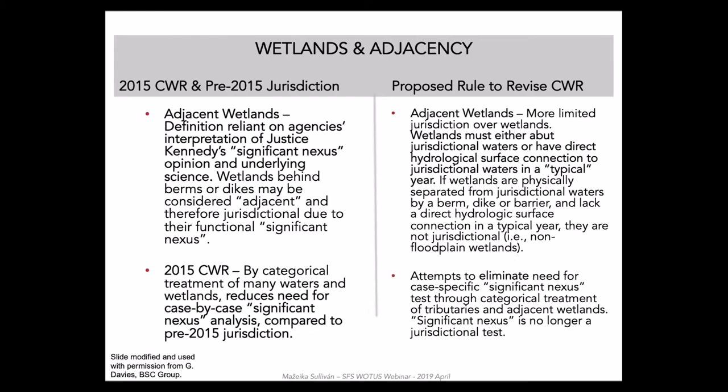What are some key differences in the proposed rule versus the 2015 and pre-2015 jurisdictions? The proposed rule eliminates Justice Kennedy's 2006 Rapanos significant nexus test for jurisdiction. There is no change in traditional navigable waters — they are still protected. But interstate waters are no longer an independent category and are only jurisdictional if they meet conditions of another category. There are major changes relative to tributaries: under the 2015 Clean Water Rule, almost all streams are protected, but under the proposed rule, ephemeral streams lose protection. For ditches, there is an overall reduction in jurisdiction with no ditches constructed in uplands and no ditches with ephemeral flows being jurisdictional.